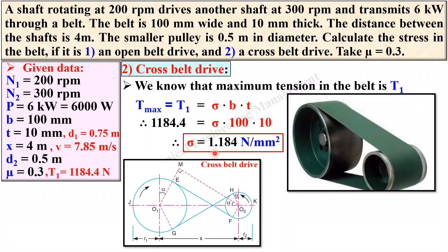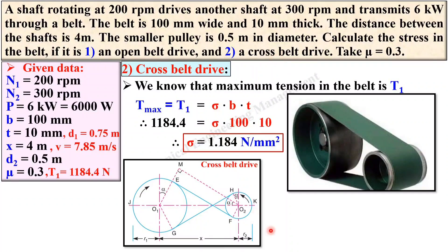This is a straightforward problem. You only need to understand Case 1 well, because Case 2 is almost similar. The only difference between open belt drive and cross belt drive is in the formulas for theta and alpha. If you have any questions, write in the comment box. Thanks for watching — please hit the like button.